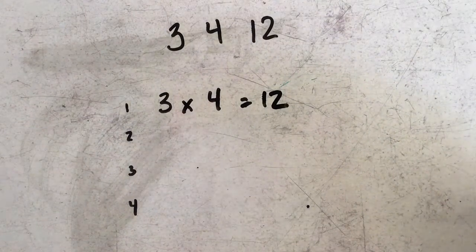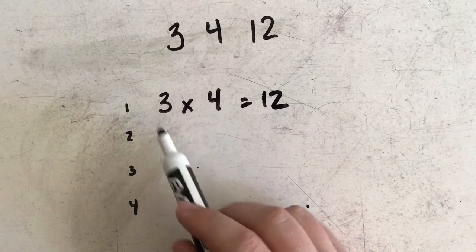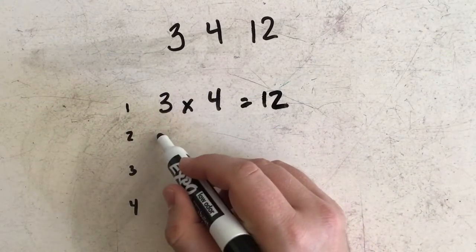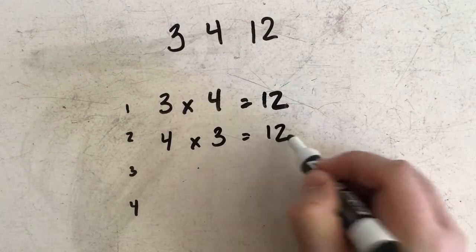The commutative property of multiplication tells me that I can change the order of these two factors to write another multiplication sentence. So I could also say that 4 times 3 is equal to 12 as well.